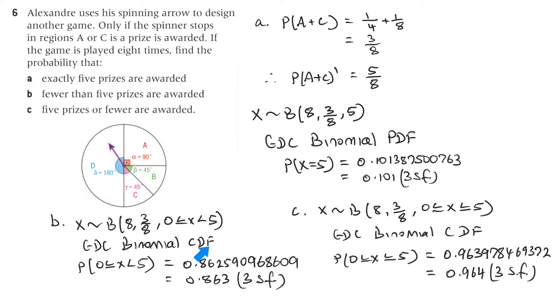So in the GDC binomial CDF, you should put in for the Inspire: eight, three on eight. Remember, it's CDF from zero to four. And on the 84, do this and put this as zero less than or equal to X less than or equal to four. And you'll get 0.862590968609. And that's 0.863 to three significant figures.